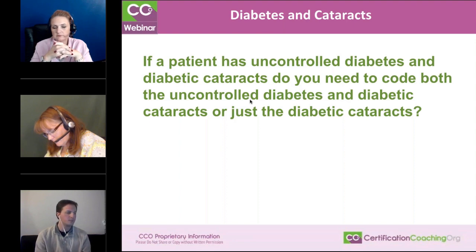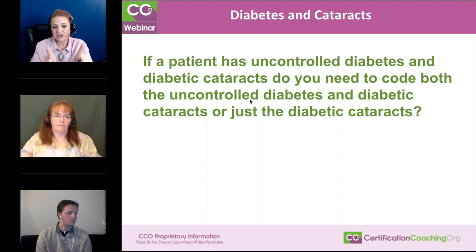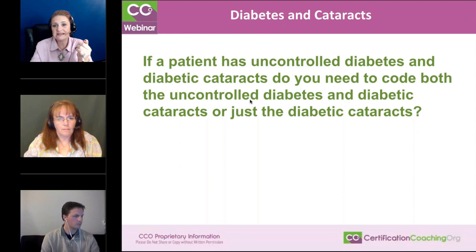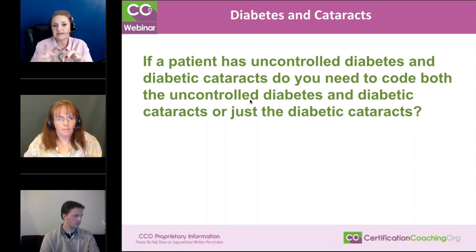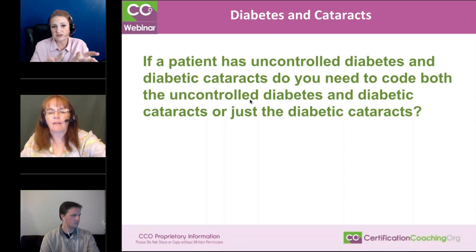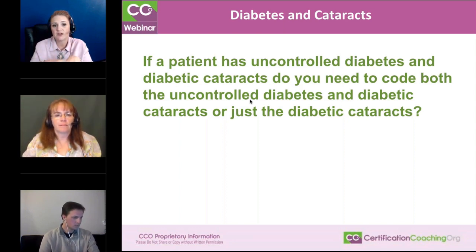You have to query the provider in this instance. Now look at it from a risk adjustment aspect too. Diabetic cataracts is a chronic condition and it's going to risk adjust at an 18. Whereas diabetic hyperglycemia might risk adjust at a 17 — I don't think it's a 19. So you need to collect both of those codes if you're doing this for risk adjustment. The hypoglycemia or hyperglycemia may be classified as a 17 because that's for acute conditions.